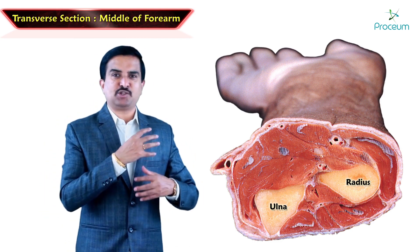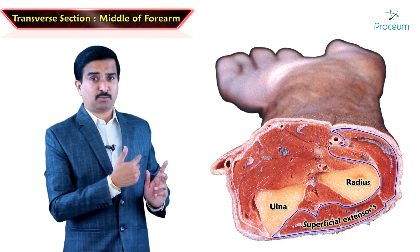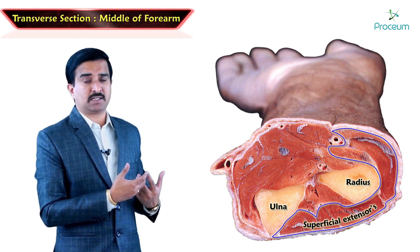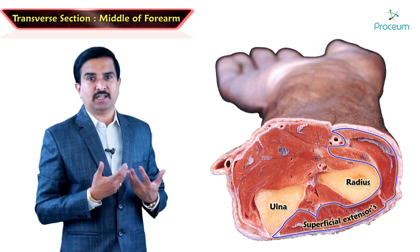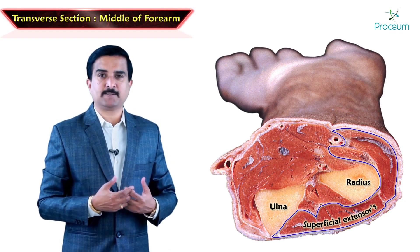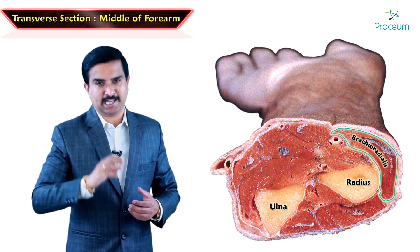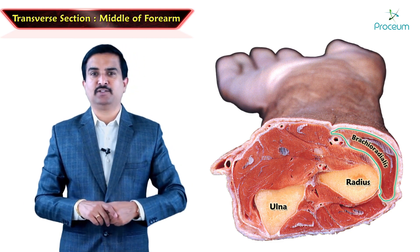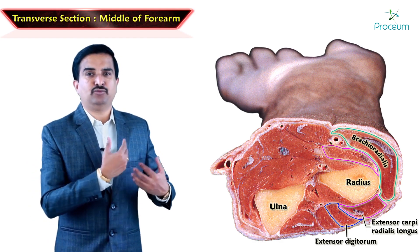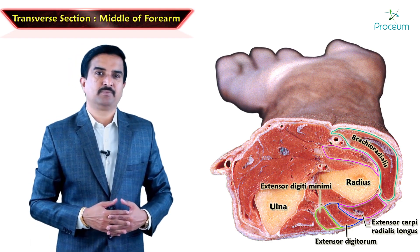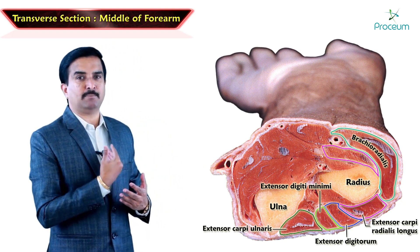In the superficial extensor group, the muscles are arranged from lateral to medial. Concentrate on the image to demarcate the muscles, because in exams you must know the orientation and methodology for identifying structures in cadaveric images. The lateral-most muscle is brachioradialis. Along the posterior aspect of the radius is the extensor carpi radialis longus, then the extensor digitorum, then the extensor digiti minimi, and next to the ulna is the extensor carpi ulnaris.